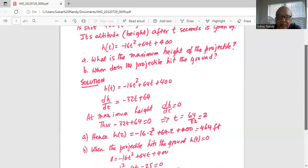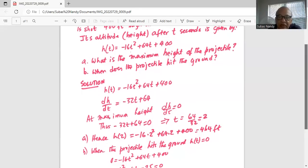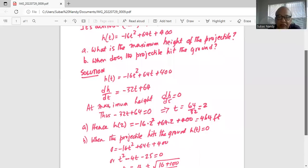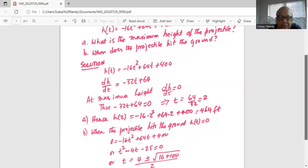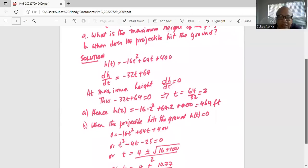Part B, when does the projectile hit the ground? When the projectile hits the ground, its vertical height is 0. So h of t equals 0. So we form a quadratic equation. 0 equals minus 16t squared plus 64t plus 400, which if we divide by negative 16 all throughout, we get t squared minus 4t minus 25 equals 0.